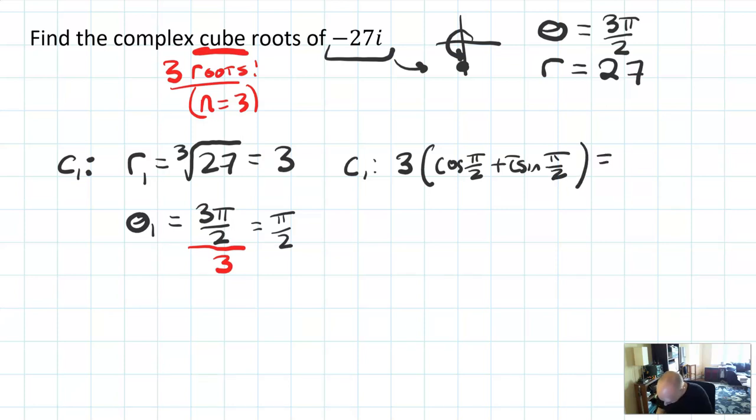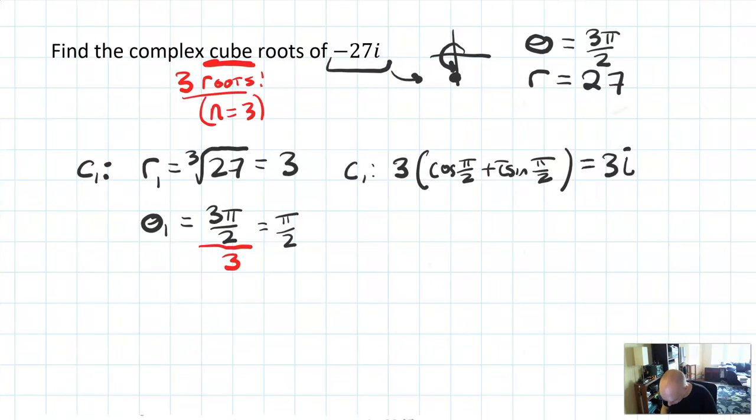So complex root 1 I could write in polar form as 3 cosine of π over 2 plus i sine of π over 2. And I'm curious about the rectangular form for this one, so cosine of π over 2 is 0, plus i sine of π over 2, so that's going to be 3i. And you can even think about it, does it make sense that 3i cubed is 27i? Yeah it does, because 3i times 3i times 3i would be 27 times i squared times i. Always good to check when you can.